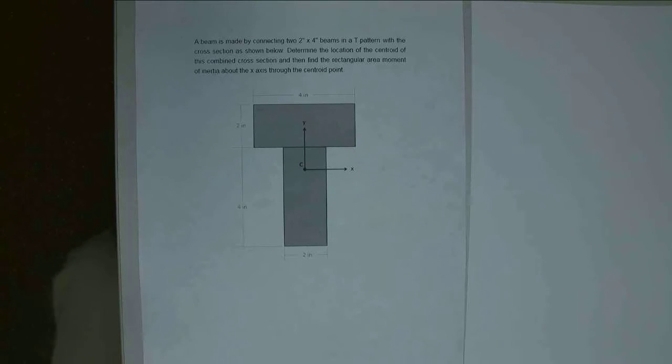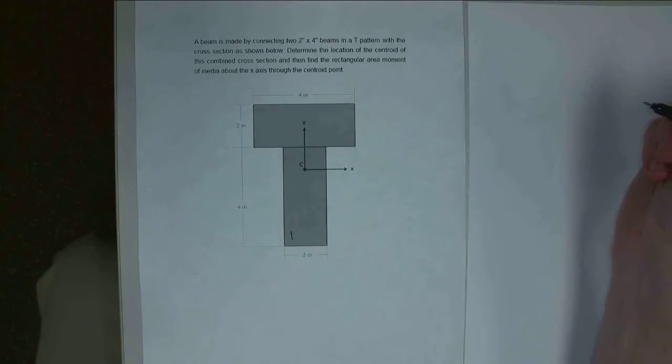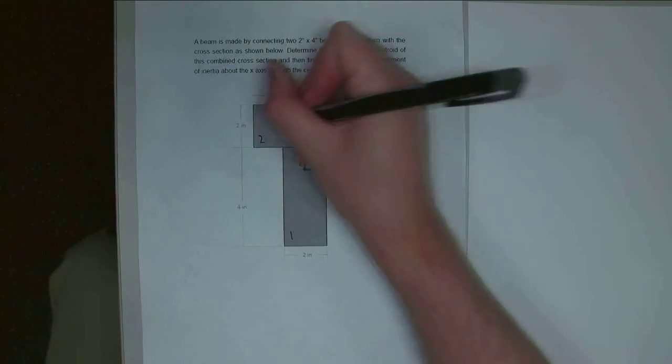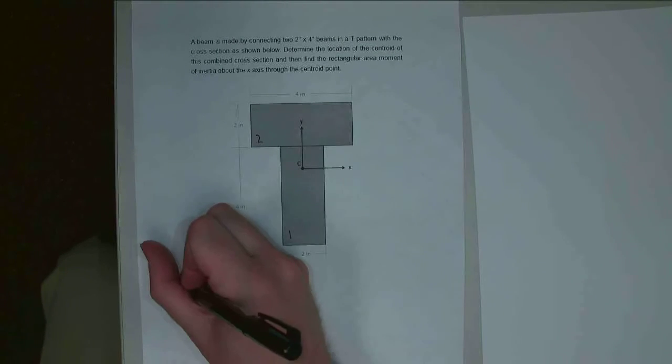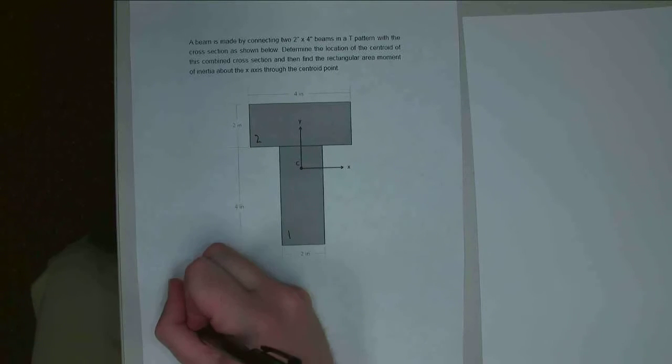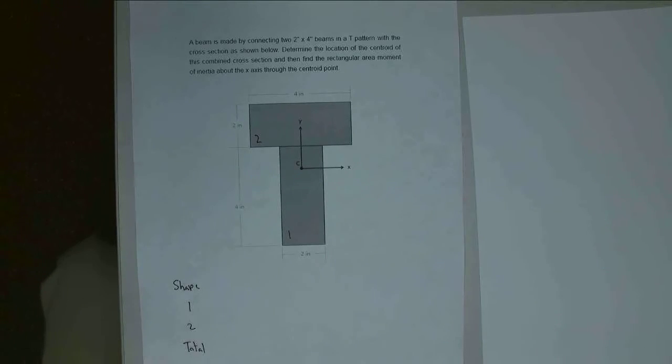Alright, so the first thing I like to do in problems like this is to come up with a table. And so I've got, with my T shape, I've got two parts. I'm going to call this bottom portion 1 and this top portion 2. And both of these are rectangles, they're going to be fairly easy to deal with. So I've got the shape, I've got 1, 2, and I'm going to make a row for the total, which we're going to use in some instances.